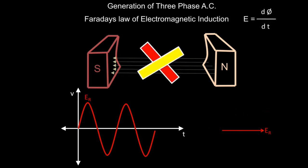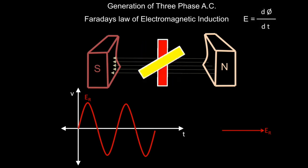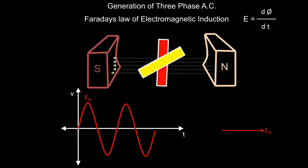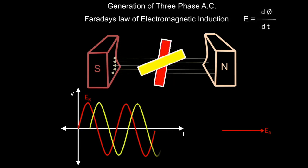Now if we take another conductor with yellow color and keep this conductor 120 degrees apart from the first red conductor and rotate this conductor as well, the rate of change of flux with respect to time will occur in the second conductor. According to Faraday's law of electromagnetic induction, EMF will get induced in the yellow conductor as well. But the waveform of this induced EMF for the yellow conductor will start from 120 degrees.